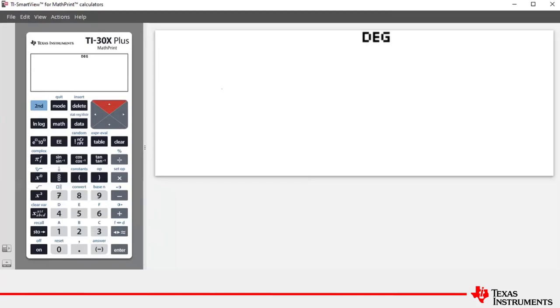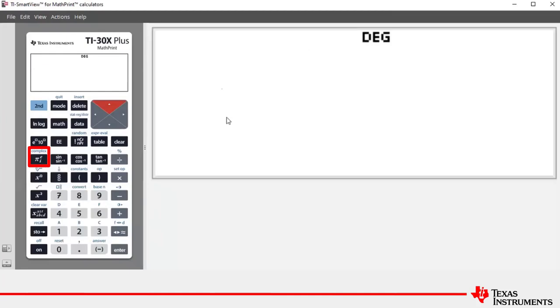Notice that the key with pi, e, and i is the key that we will use to access complex number i.